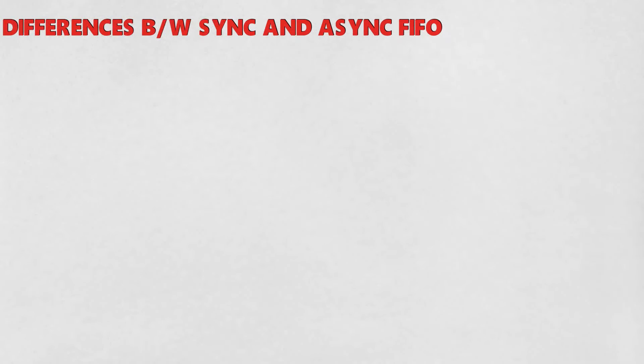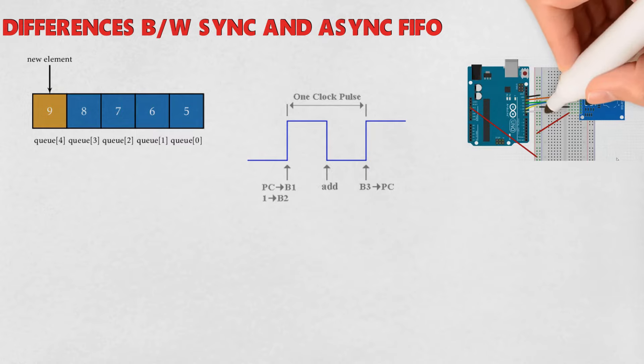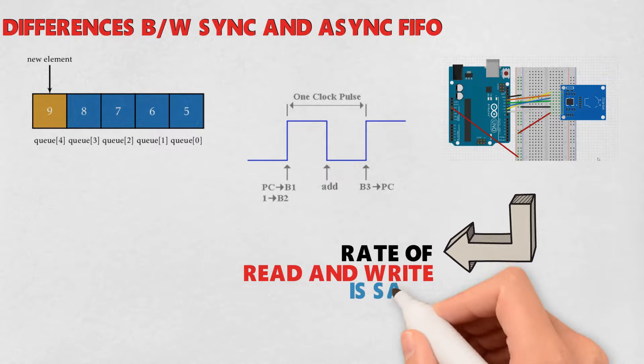Synchronous FIFO is a first in first out queue in which there is a single clock pulse for both data write and data read. In synchronous FIFO, the read and write operations are performed at the same rate.